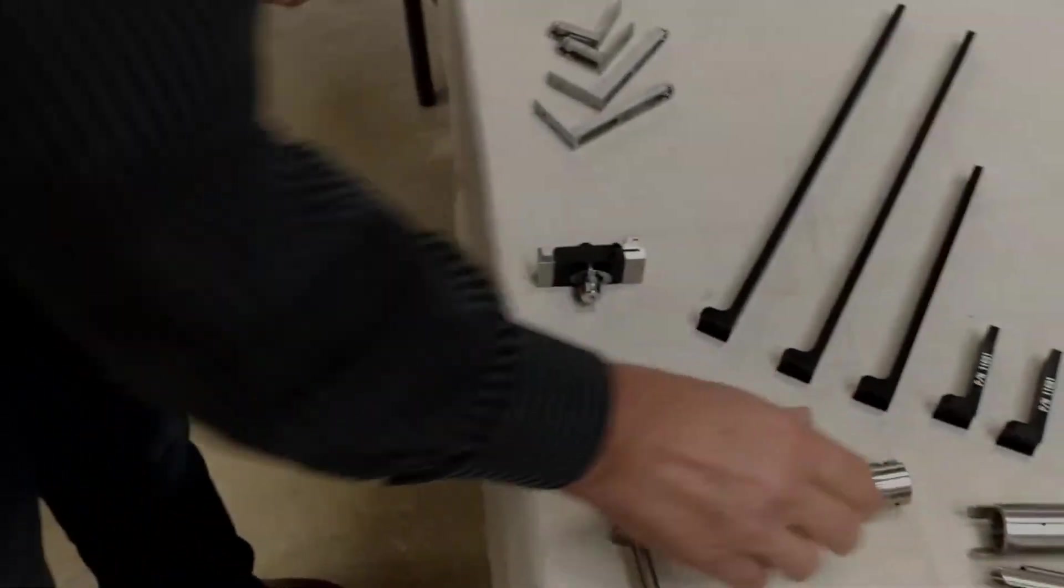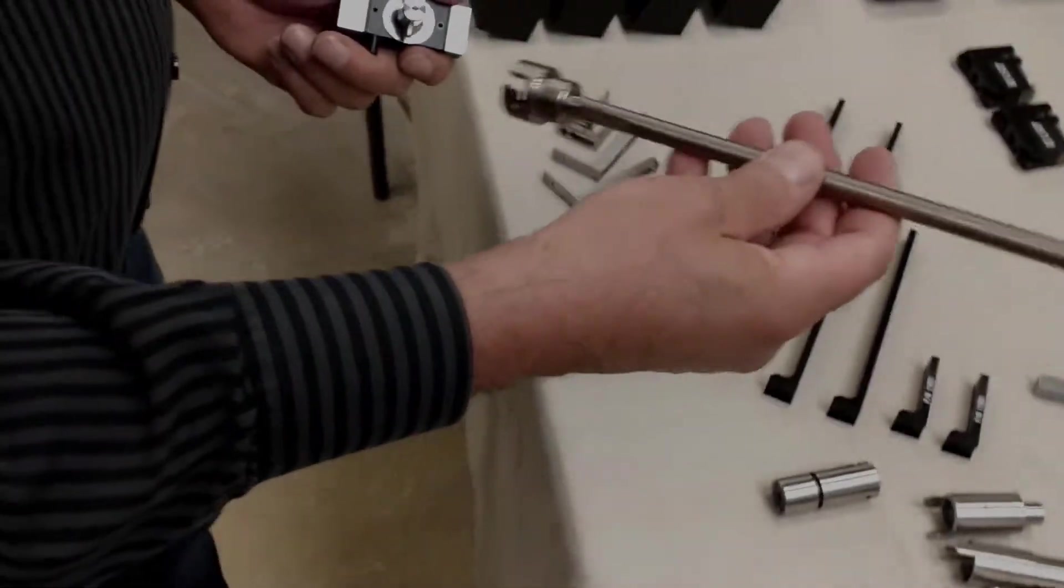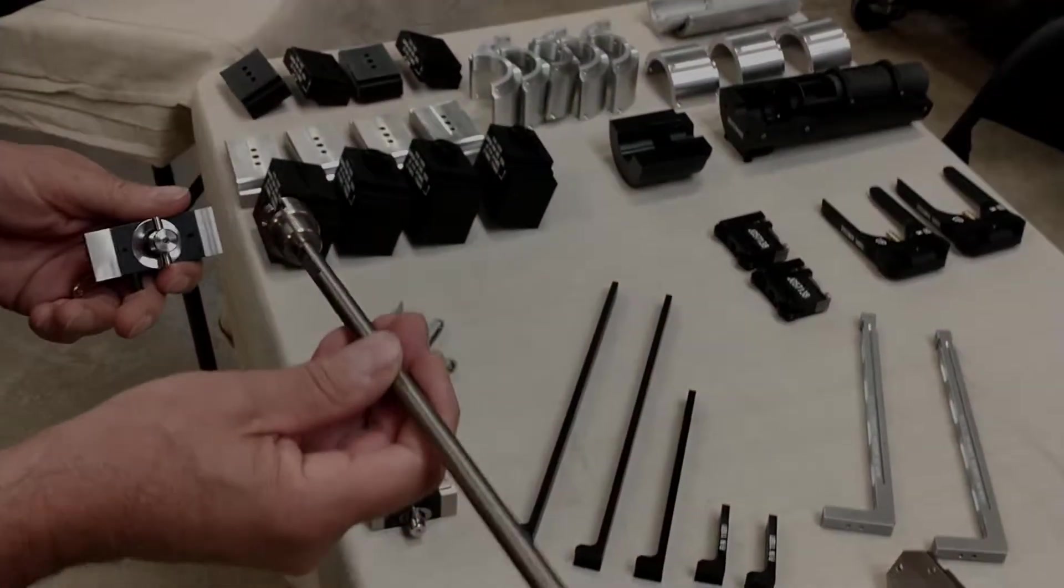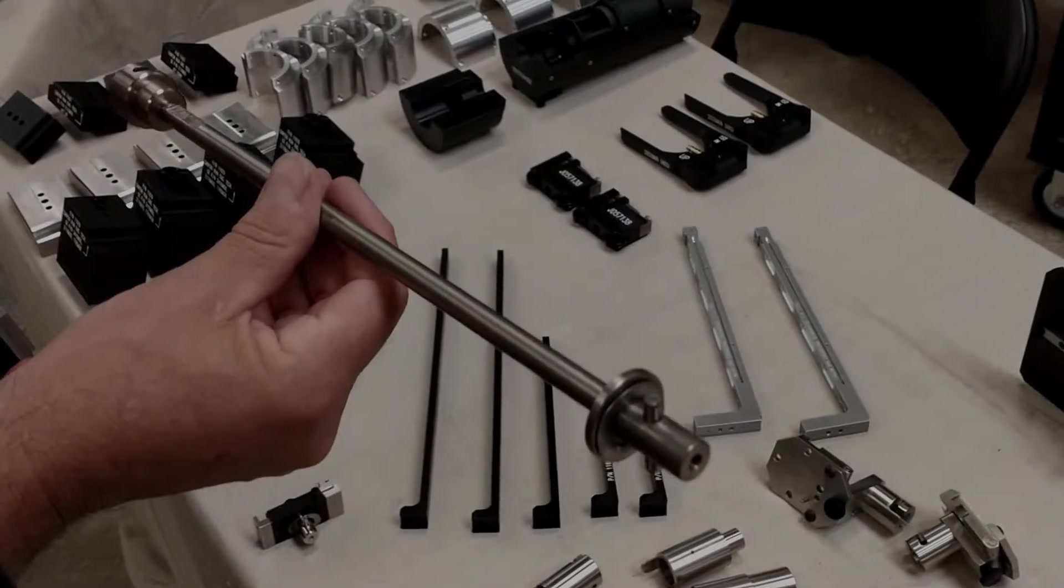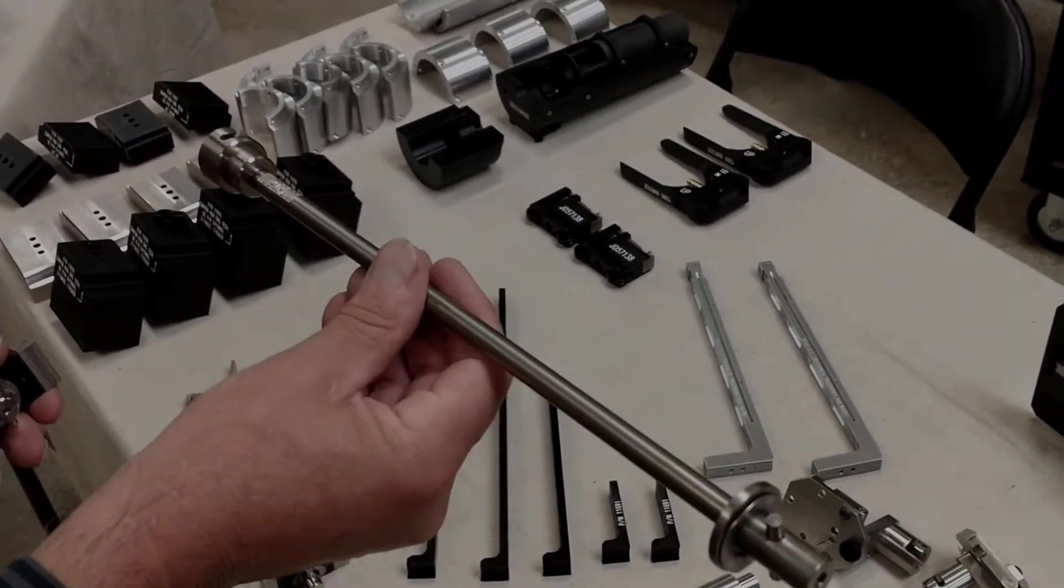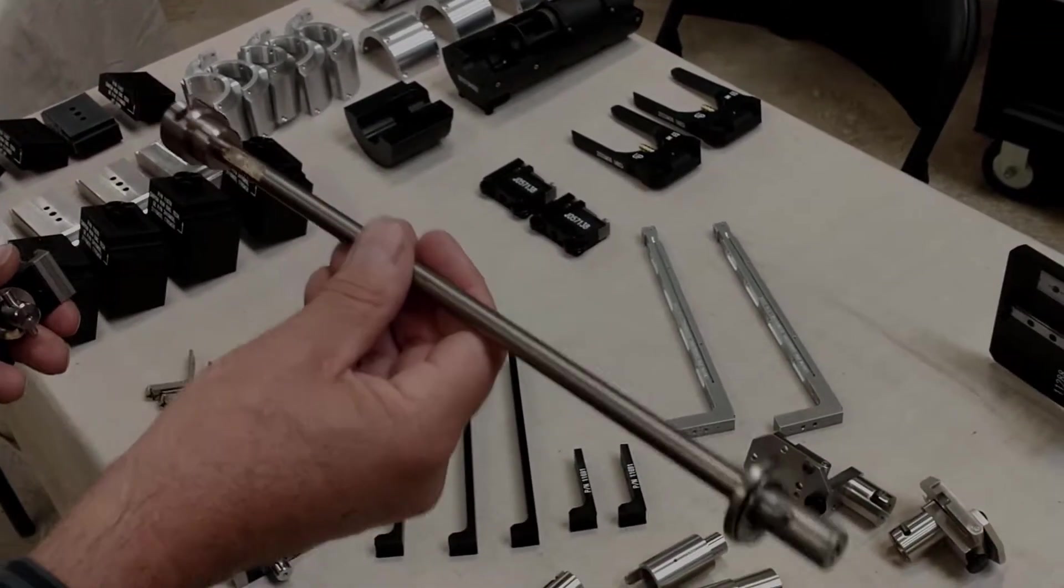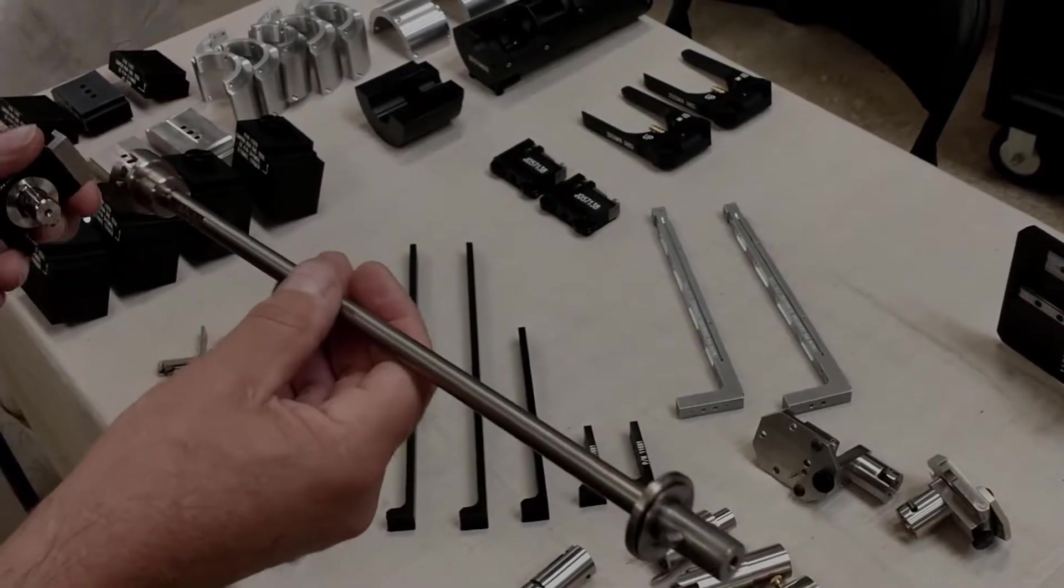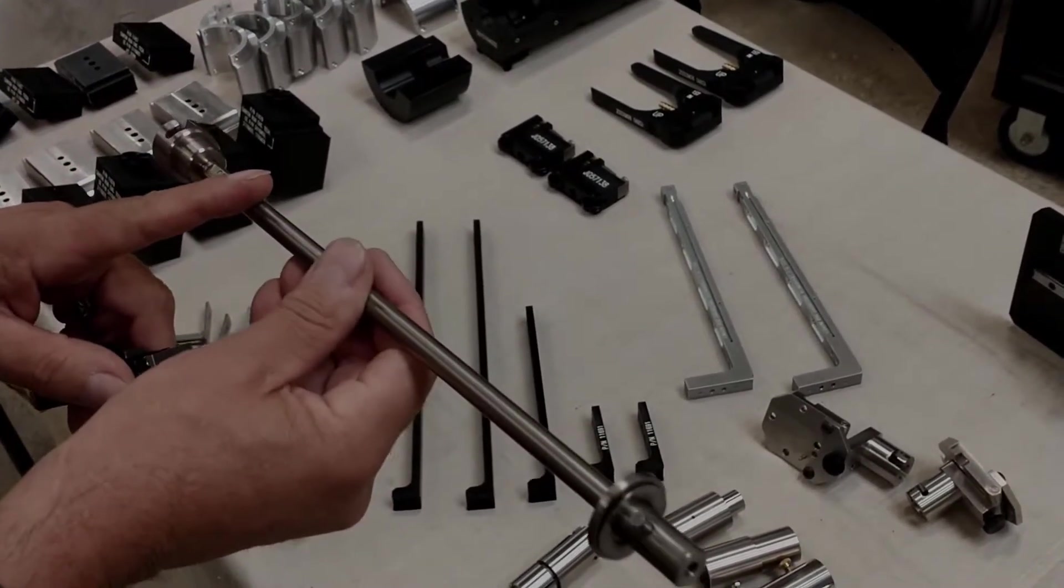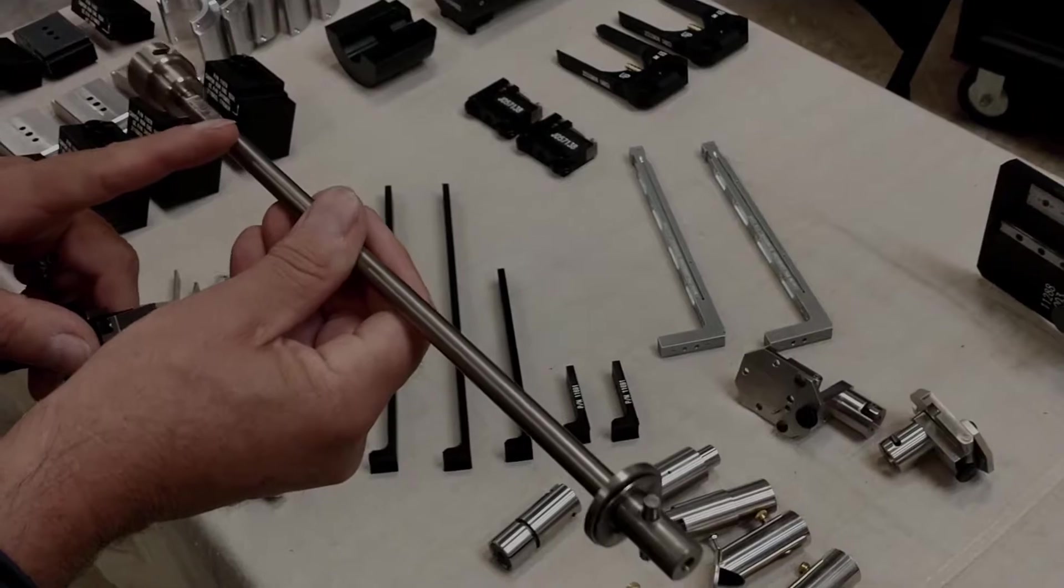We also have various lengths of extensions. Again, this one is eddy current. This is for the easy eddy system. And we have three or four different lengths of these. These are made out of titanium.